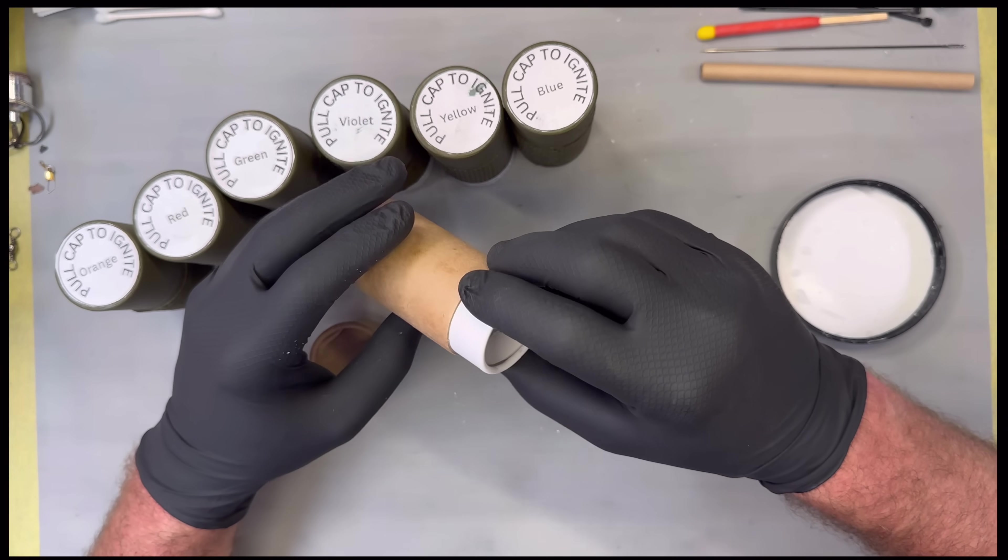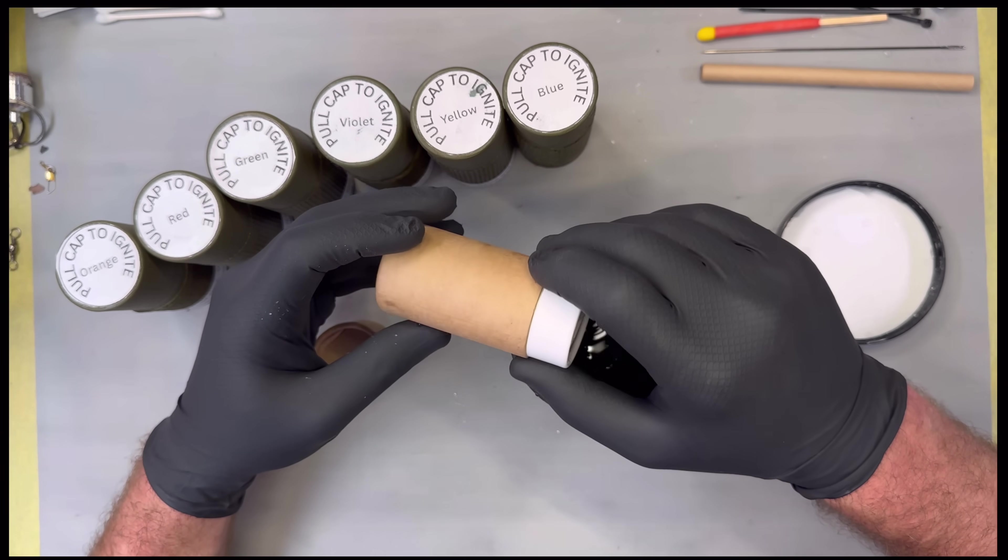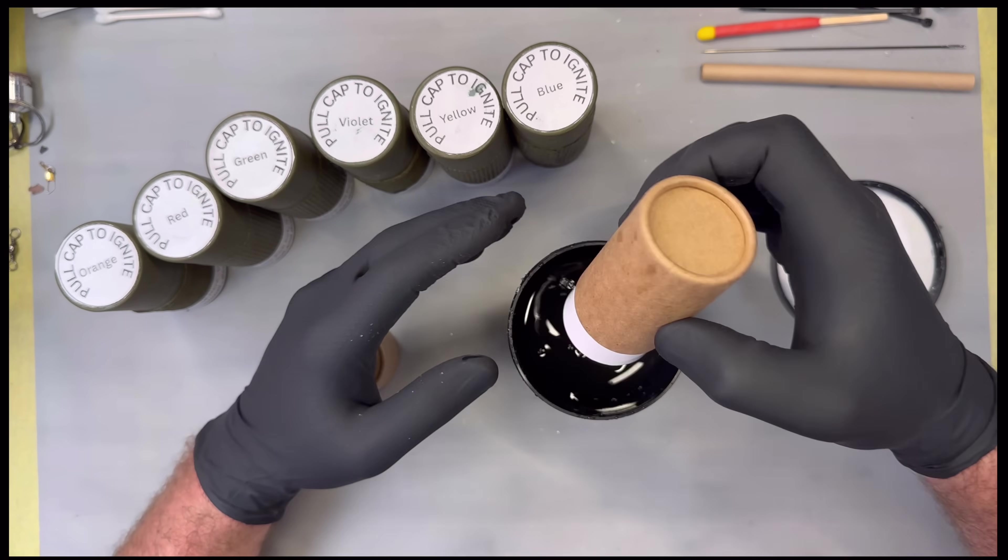Just spin it around, let it coat the sidewalls, and dump it out.